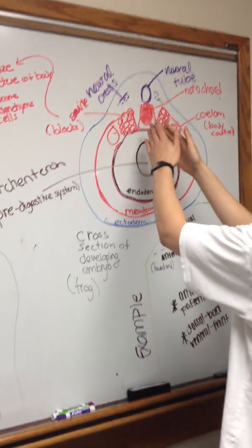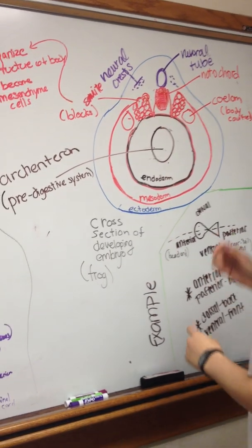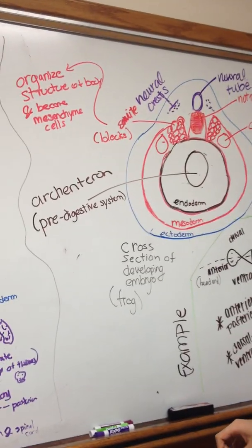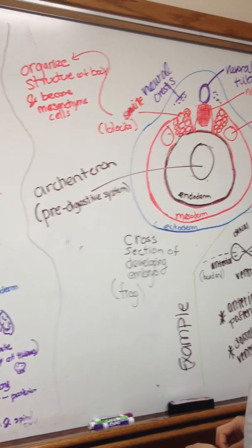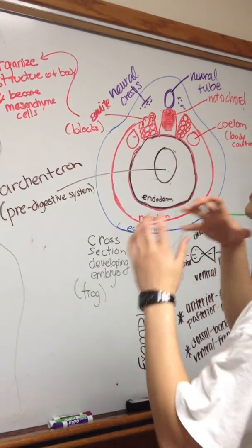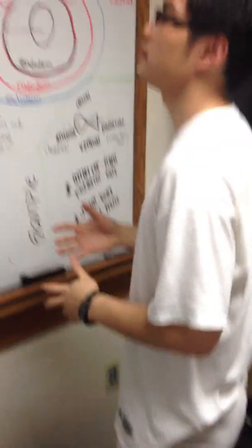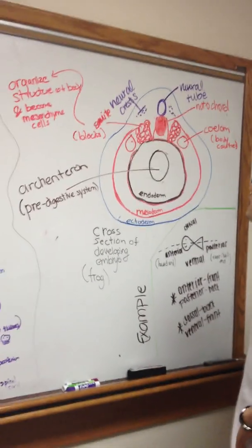To the side of the notochord, we'll have somites, which are blocks of mesoderm cells that form and will later organize the structure of the body of the vertebrae. And they'll also become mesenchymal cells as well.